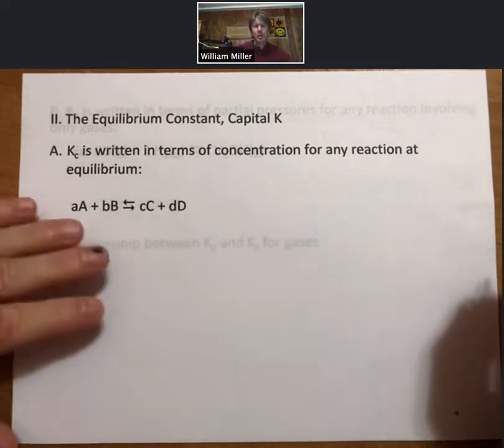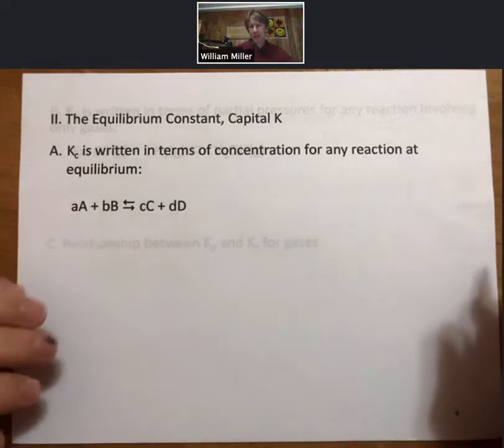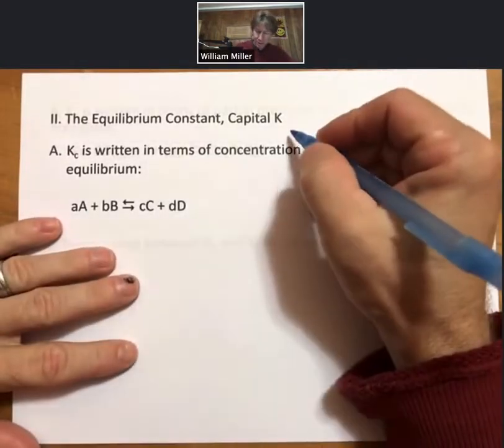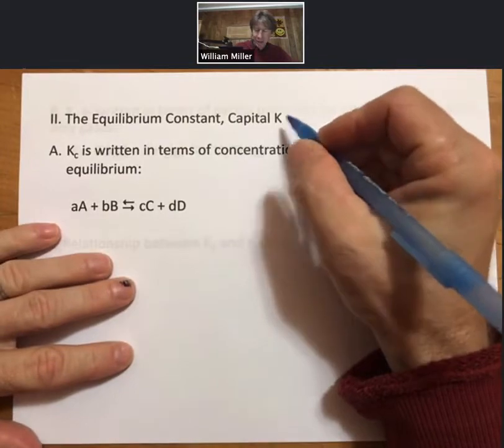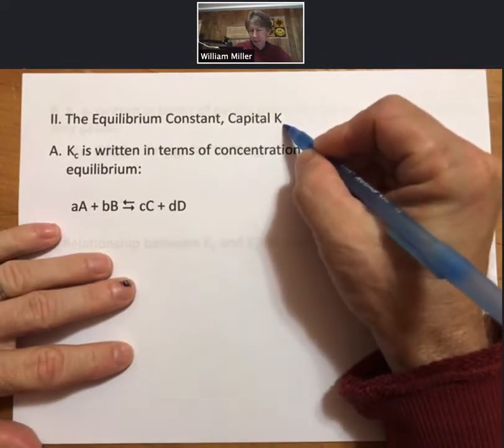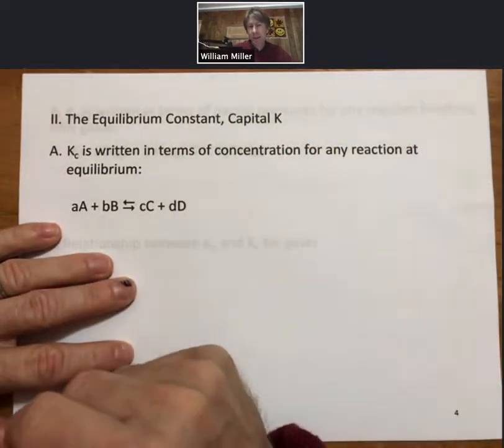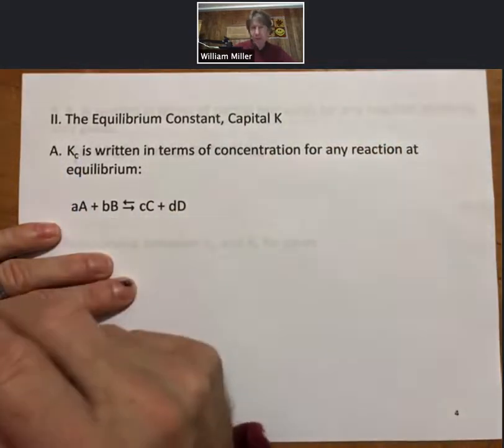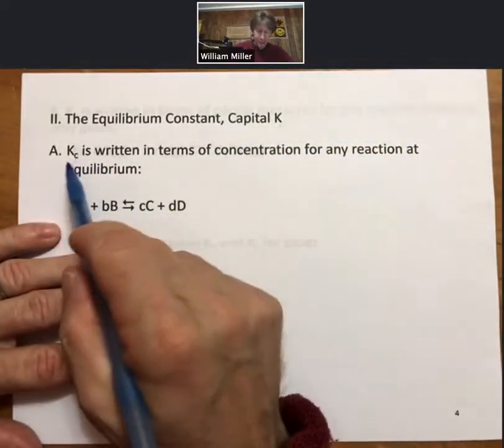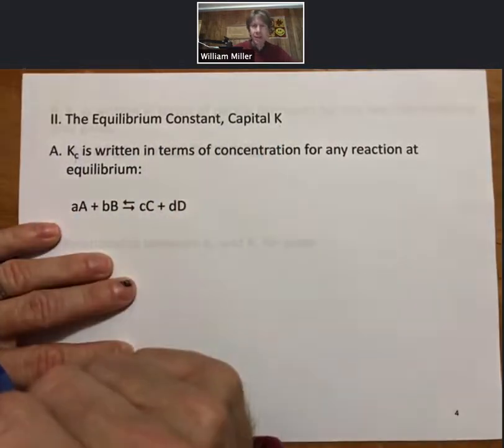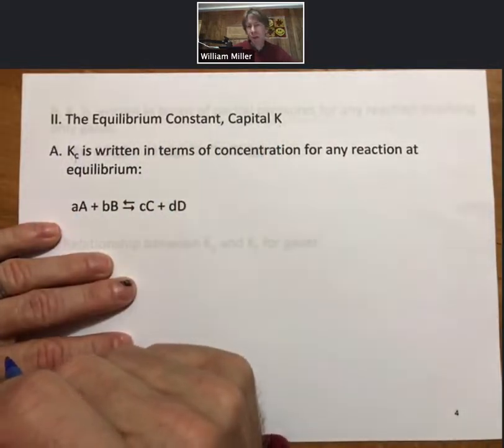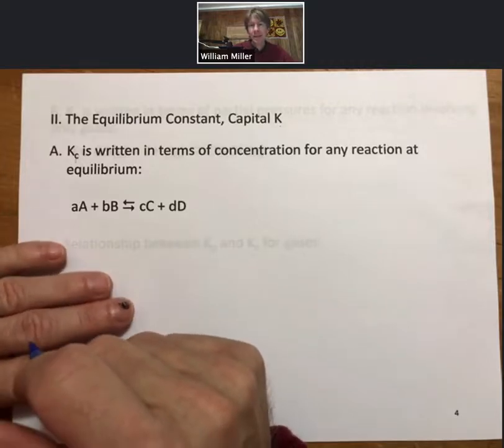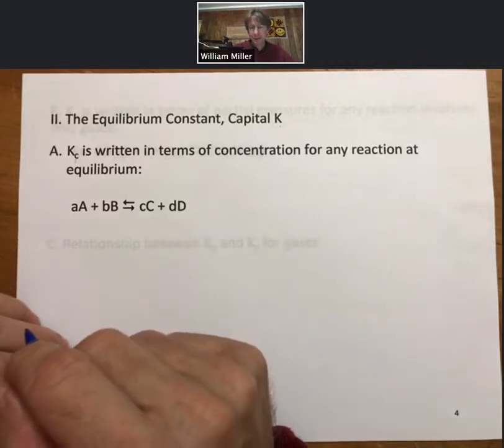Now let's talk about the equilibrium constant. It's capital or uppercase letter K, and I will just use K in general. Some people use K sub eq, where the eq stands for equilibrium. I'll just use K, and then we will see some other subscripts as we go. But in general, equilibrium constant is capital K. Lowercase k is many things, but one of them is that it's the rate constant for kinetics.